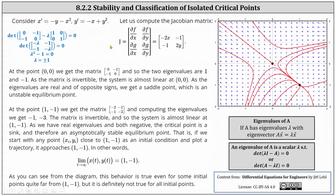For the given system, the Jacobian matrix is the 2×2 matrix with entries −2x, −1, −1, 2y. At the point (0, 0), we get the Jacobian matrix with entries 0, −1, −1, 0, and so the two eigenvalues are 1 and −1, as shown in blue. Since the Jacobian matrix at (0, 0) is invertible, we know the system is almost linear at (0, 0). Because the eigenvalues are real and of opposite sign, referring back to our table, we get a saddle point, which is an unstable equilibrium point.